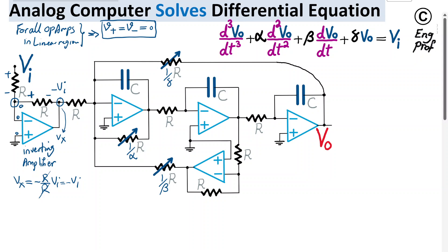That's the inverting amplifier with a gain of negative 1 — amplifier number 1 with a gain of negative 1. So negative Vi appears at this node.